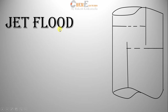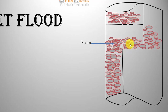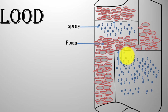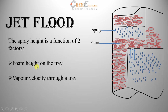Coming to jet flooding — in addition to foam, which is a mixture of vapor and liquid, there is a quantity of spray, that is entrained liquid, present in the downcomer and tray deck. The presence of spray is due to the flow of vapor through the tower. The spray height of entrained liquid is a function of two factors: foam height on the tray and vapor velocity through the tray. These two factors are also interdependent.